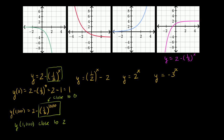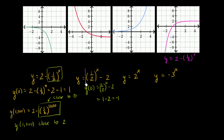Now let's look at y equals 1 half to the x minus 2. When x is 0, y of 0 is 1 half to the 0 power minus 2, which equals 1 minus 2, which is negative 1. Both remaining candidate graphs have y equal to negative 1 when x is 0. As x becomes larger and larger, 1 half raised to larger values approaches 0, so y is going to approach negative 2.